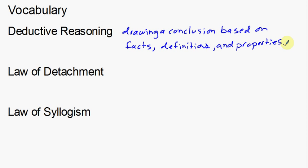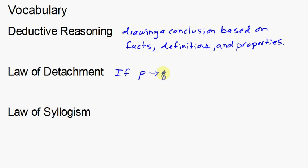Next, we have the law of detachment. You're going to have to understand a little bit of notation that we've used previously. We'll go over the definition first: if P, then Q. So this notation is what I was just talking about — this here is a conditional statement.